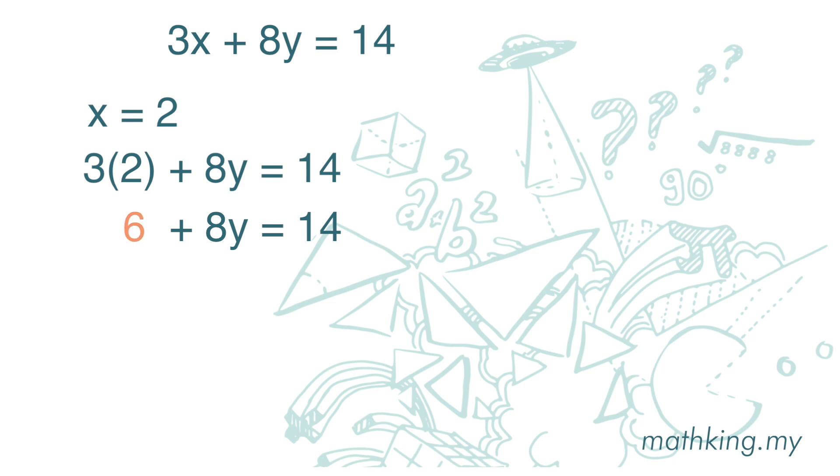We move 6 to the right-hand side. 14 minus 6 is 8. Multiply by 8 when moved over becomes divided by 8. We have y is equal to 1. So when x is 2, y is 1.